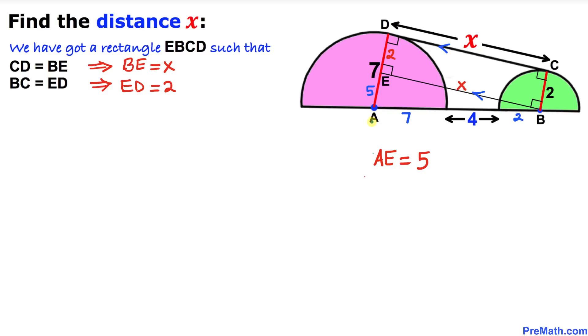So thus the total distance between these points A and B is going to be the sum of these numbers: 7 plus 4 and then plus 2. And if we add these numbers 7 plus 4 plus 2, that is going to give us 13. So thus our distance AB is 13. And moreover we know that this distance BE is x.